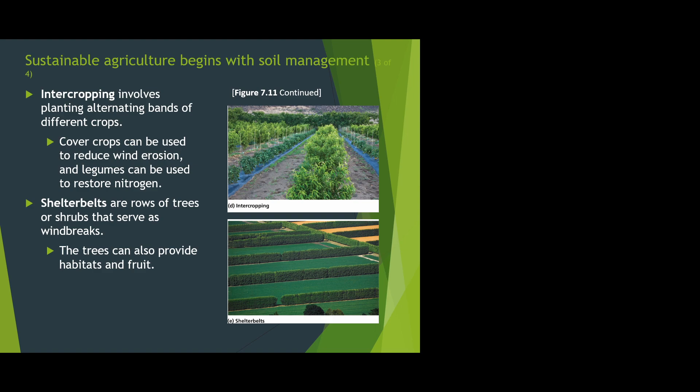When I studied sustainable agriculture at WVU, we calculated how much more yield you get from planting corn, beans, and squash together. You take those three things to the market and make more money than just planting a whole acre of corn. There are very few times where intercropping wouldn't make the farmer more money.